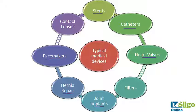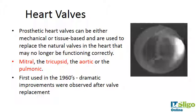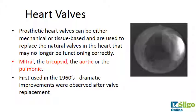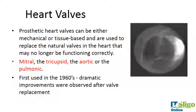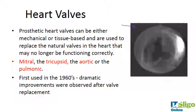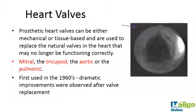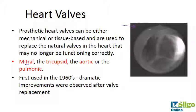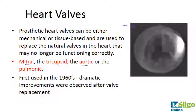Prosthetic heart valves are a type of heart valve that can be mechanical or tissue-based, used to replace a natural valve in the heart that is no longer functioning correctly. This open-source video shows a pig heart valve in a laboratory setting — it's a tricuspid valve, and you can see the three leaflets opening and closing as blood flows through. There are four different types of valves: the mitral, tricuspid, aortic, and pulmonic. They were first used in the 1960s, with dramatic improvement observed after valve replacement.